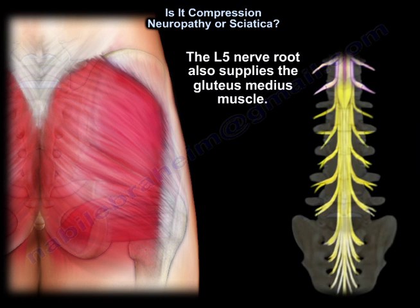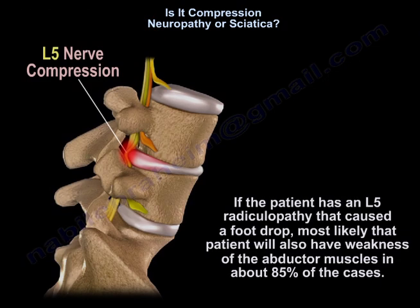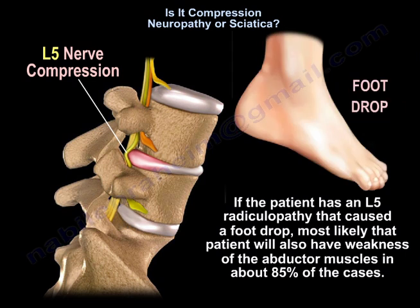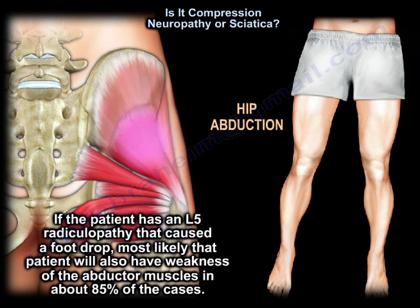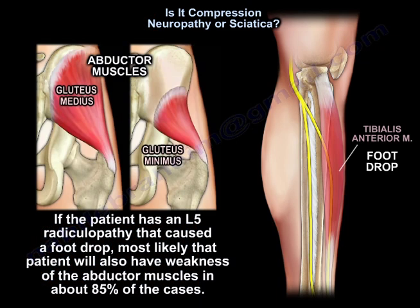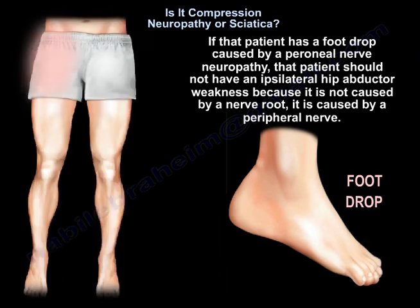The L5 nerve root supplies the gluteus medius. So if the patient has an L5 radiculopathy causing a foot drop, that patient will also most likely have weakness of the abductor muscles in about 85% of cases. If the foot drop is caused by a peroneal nerve neuropathy, that patient should not have ipsilateral hip abductor weakness, because it is caused by the peripheral nerve, not the nerve root.